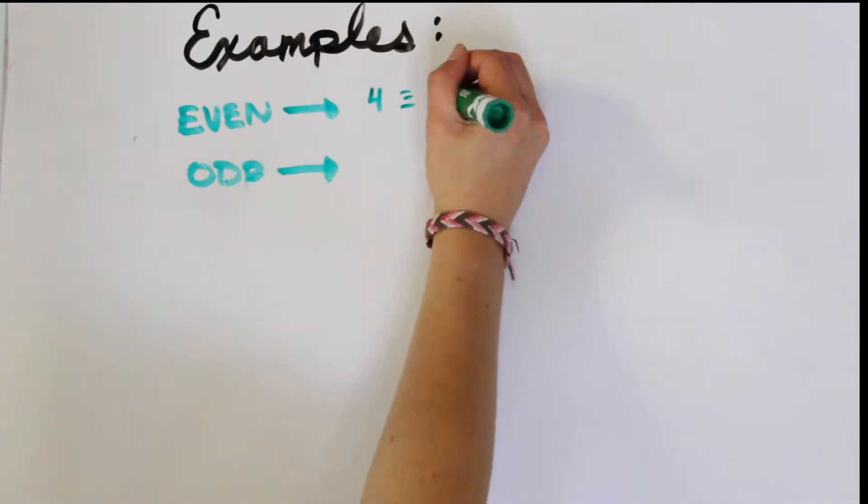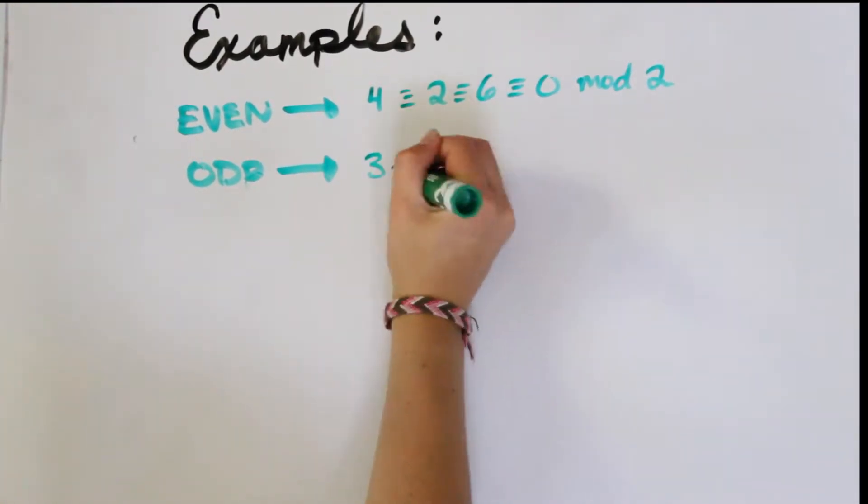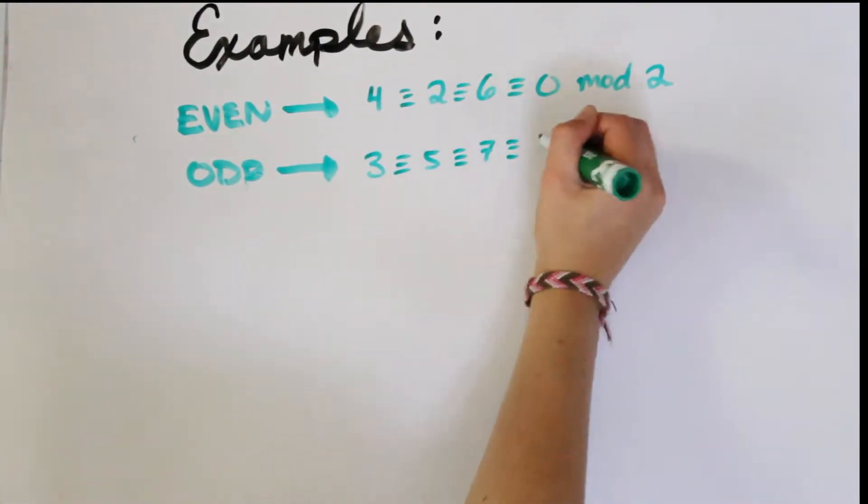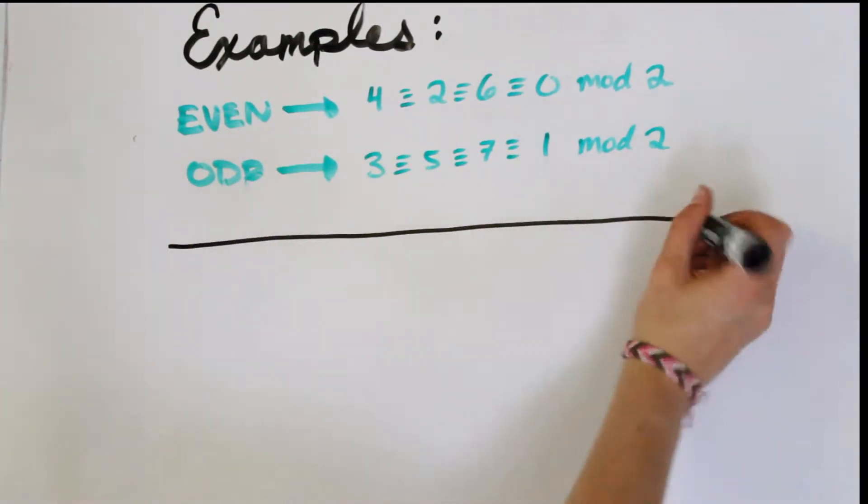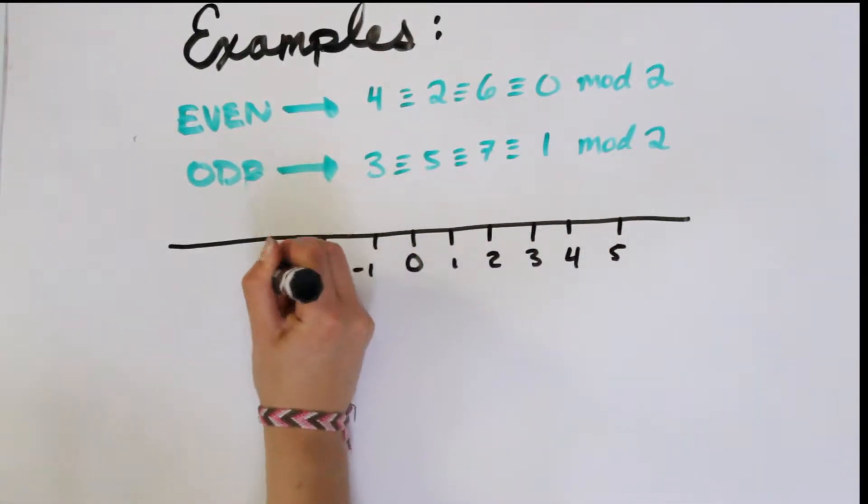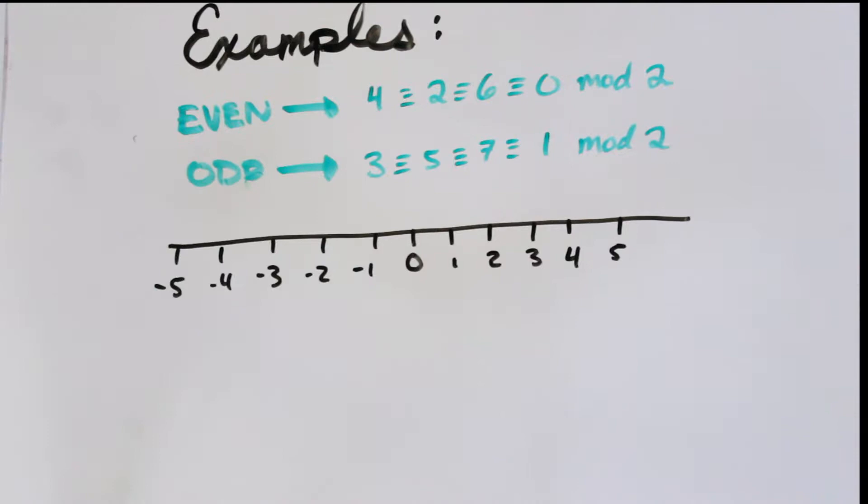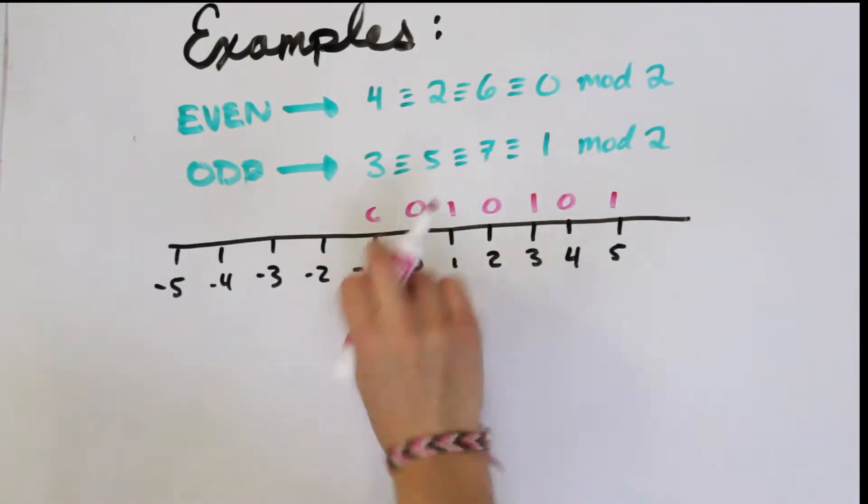All the odd numbers have a remainder of 1 when divided by 2, and so the even numbers are congruent to 0 mod 2, odd are congruent to 1 mod 2. We can think of our number line and above each number we have alternating ones and zeros, this repetitive measure that we were talking about earlier.